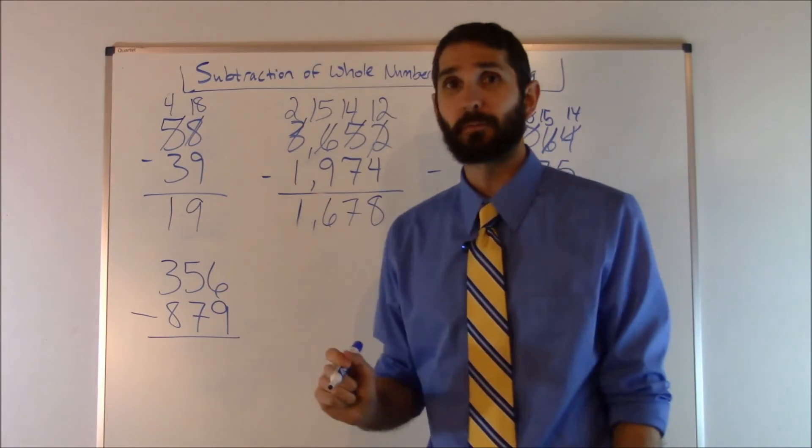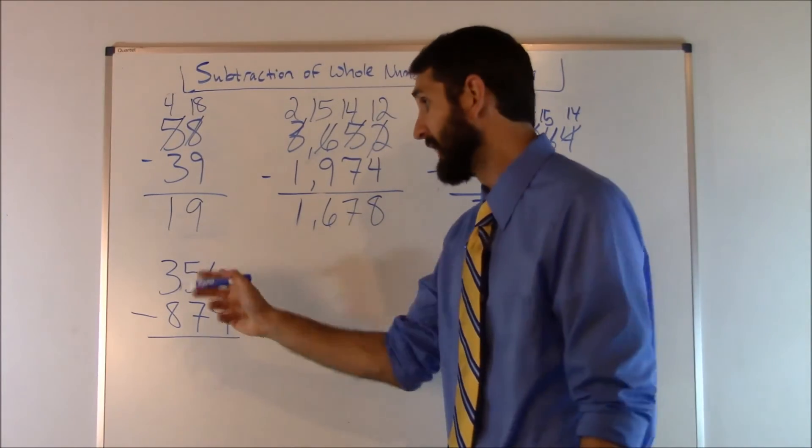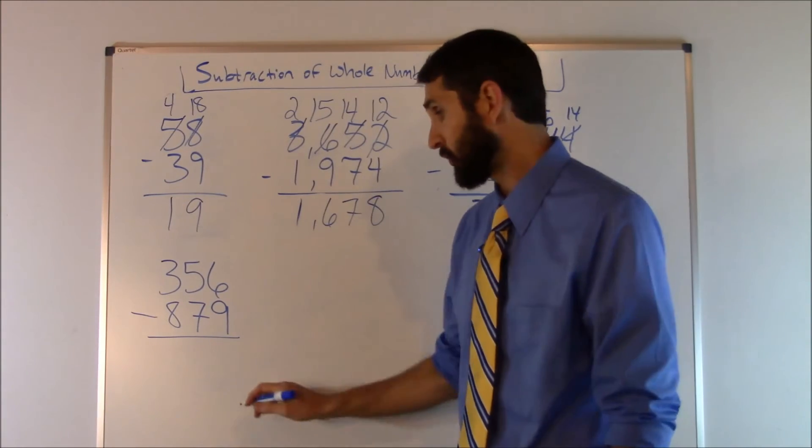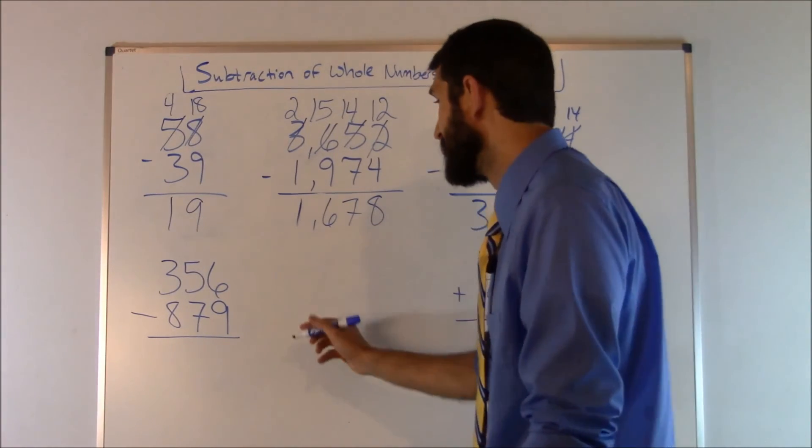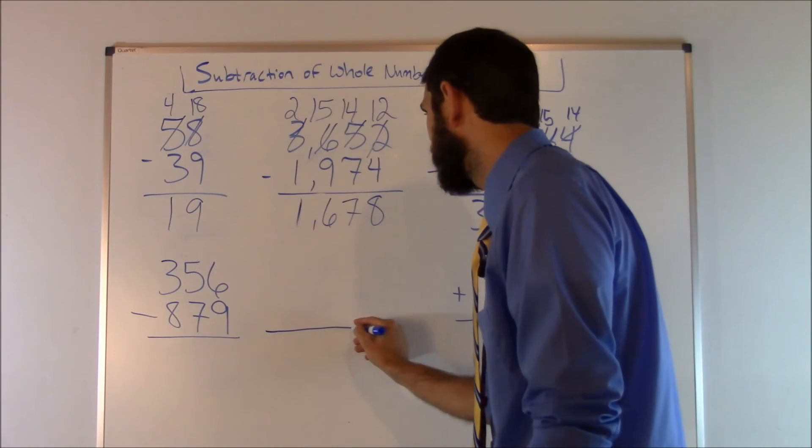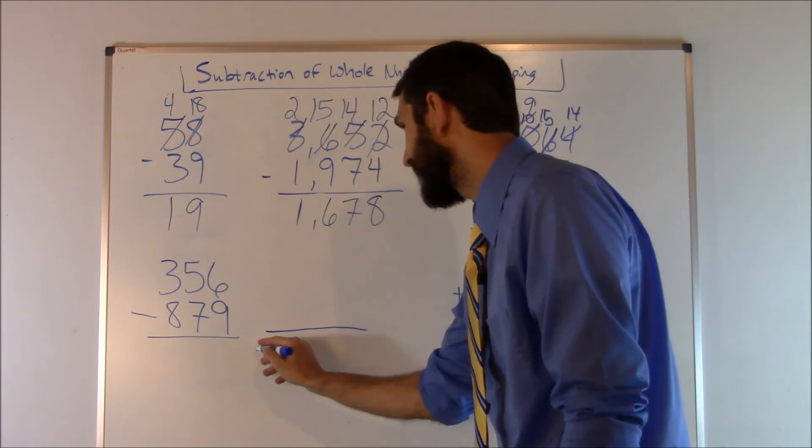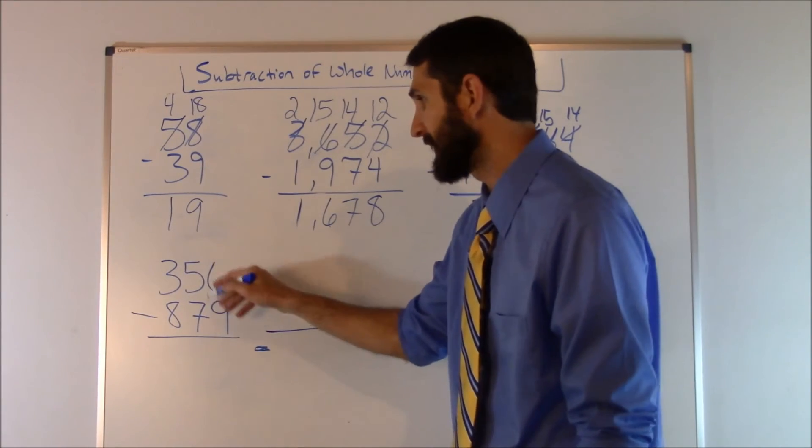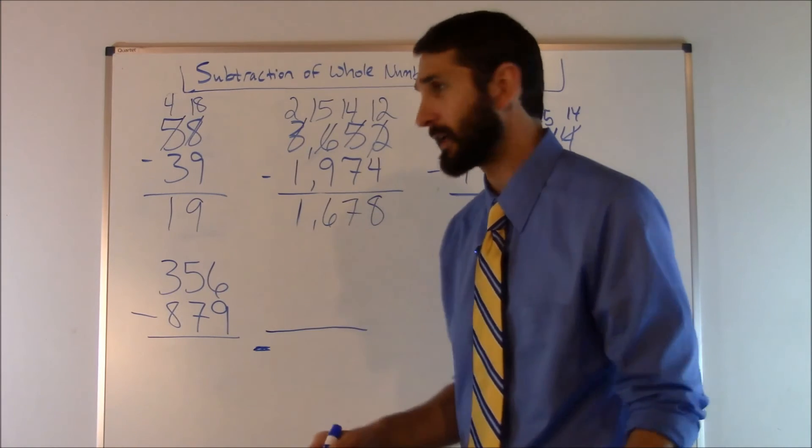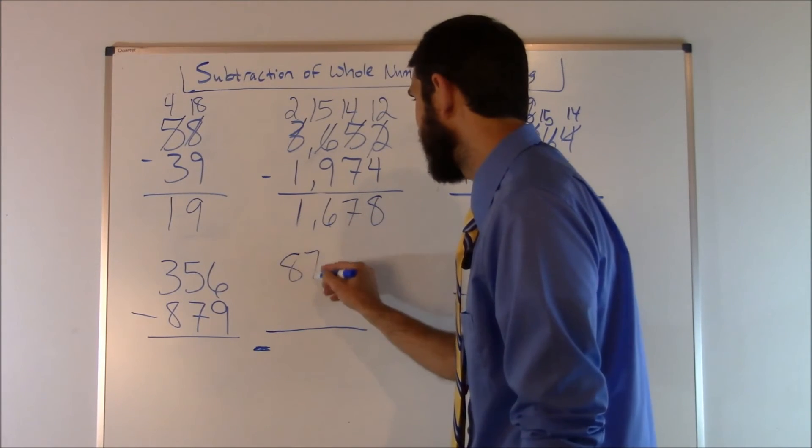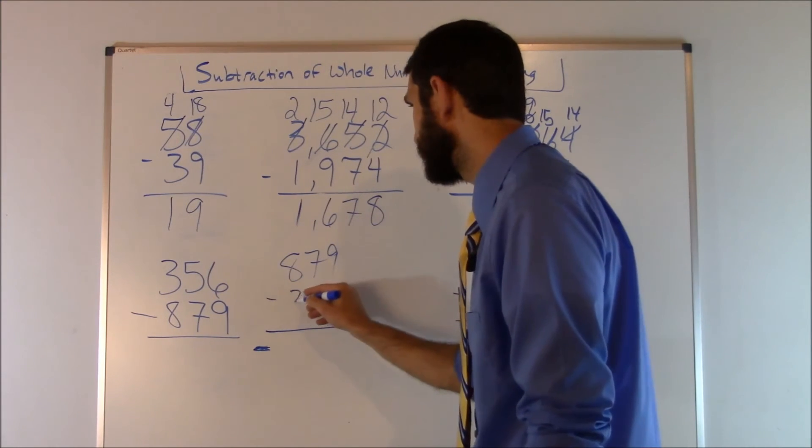So I'm going to show you a real quick way to solve this. Instead of solving the problem like that, since it's going to be a negative number, an easy way is just to rewrite that problem out and create a negative sign down here. So we'll redraw the problem out. We'll put a negative sign because we're flipping. We're solving for this but we're going to flip it just to make it easier on us. So we say 879 minus 356.